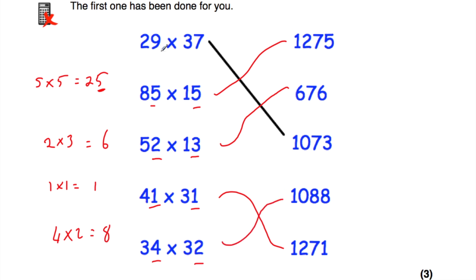So matching the answers: 29 times 37 is 1,073. 85 times 15 is 1,275. 52 times 13 is 676. 41 times 31 is 1,271. And 34 times 32 is 1,088.